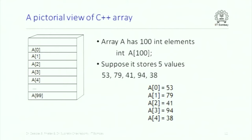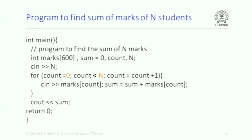If you have an array of 100 integer elements, each element will be allocated four consecutive bytes because int is four bytes. Consecutive memory locations are allocated to different elements of the array. The way the array is declared is: you write a size — an absolute number inside square brackets — the name, and define the type of the array. Every element of the array is accessed by an index. So if you want to find out the sum of n marks, you declare a marks array and start with sum equal to 0.